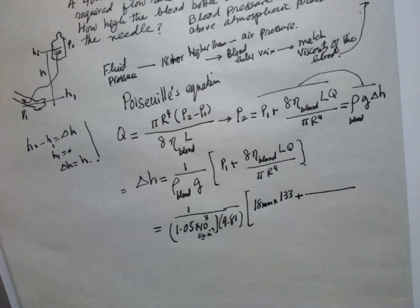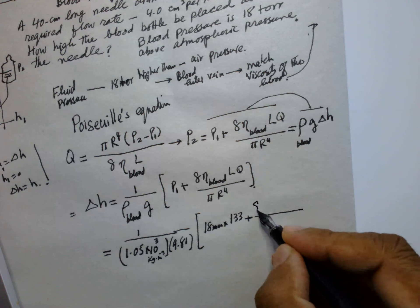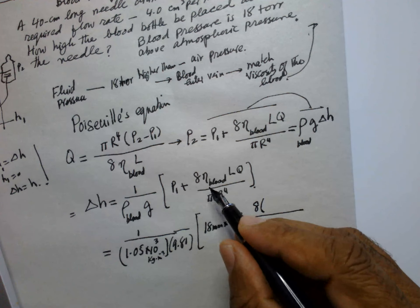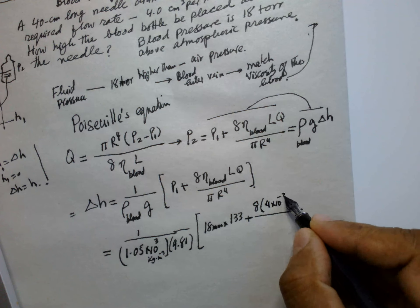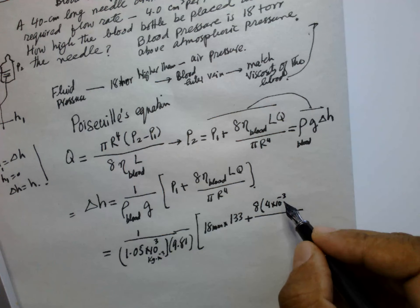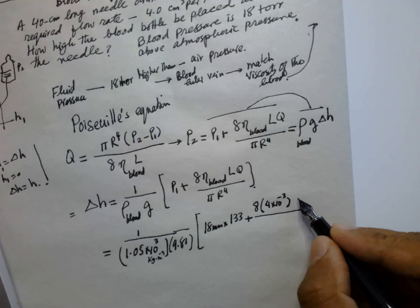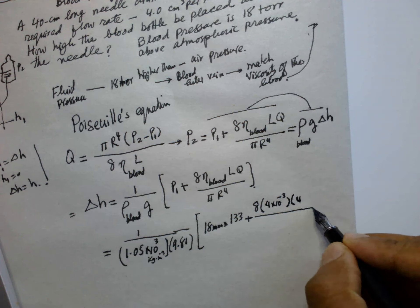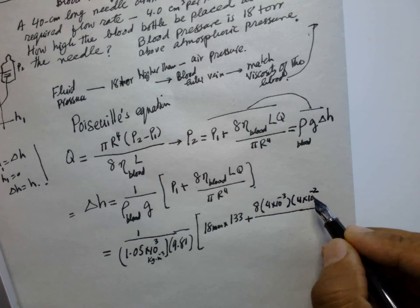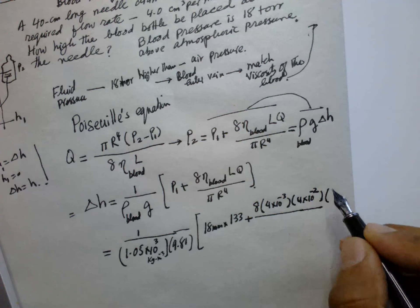plus 8 times the viscosity which is equal to 4 × 10⁻³ times the length which is 0.04 m multiplied by the flow.